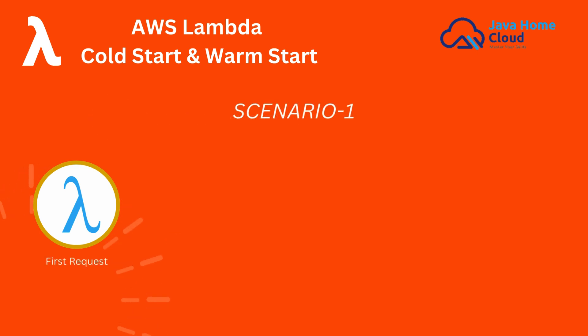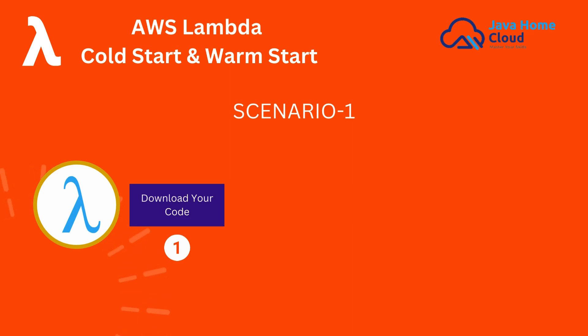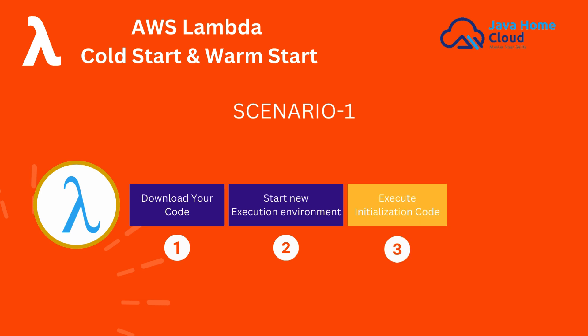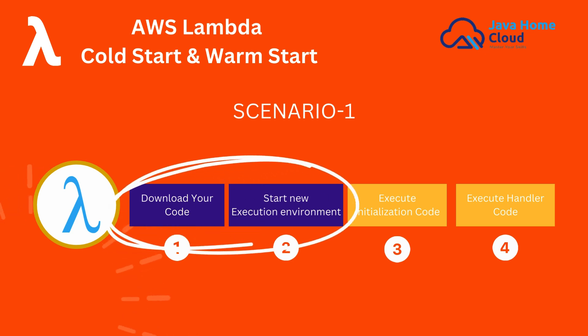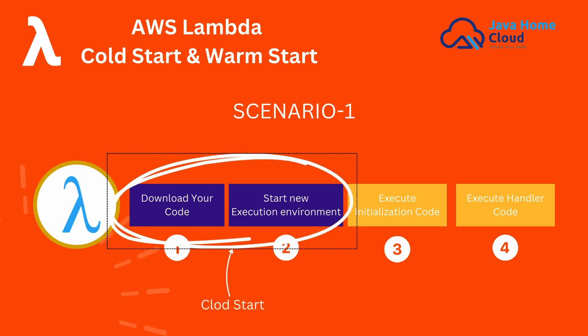Let's take two scenarios. Number 1: Lambda receives the first request and there is no existing environment. Lambda has to download the code, start a new execution environment, run the initialization code, then execute the handler function. In this process, Step 1 — downloading the code — and Step 2 — starting a new execution environment — are part of the cold start. When these two steps are executed upon receiving a request, we call this a cold start.